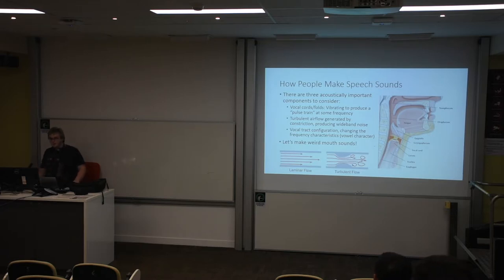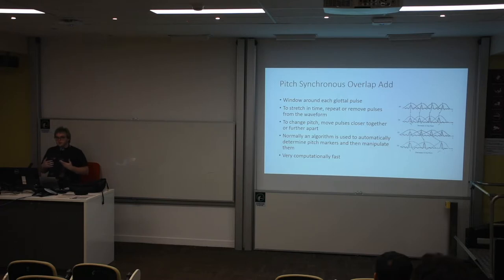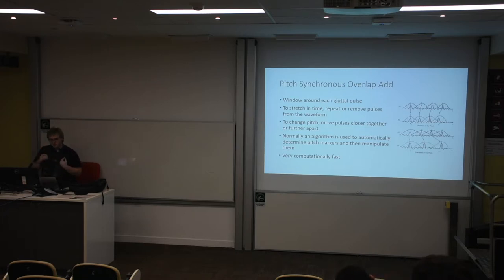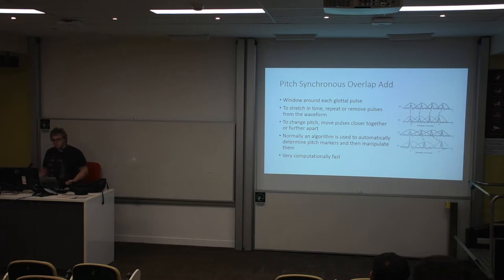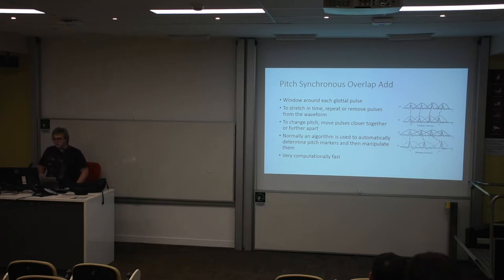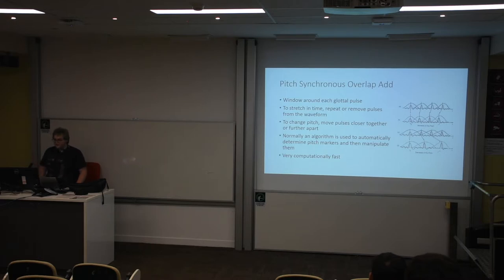Knowing how speech is generated, there's a computationally simple way to change duration and pitch independently. The component producing pitch is the vibration of the vocal folds — each pulse of air is acted upon by the resonance of the vocal tract but is still just a pulse. Moving those pulses closer together in the time domain increases pitch while retaining formant characteristics within each pulse; moving them further apart decreases pitch. This is done entirely in the time domain with no Fourier calculation, making it very fast — a good approach for embedded systems.